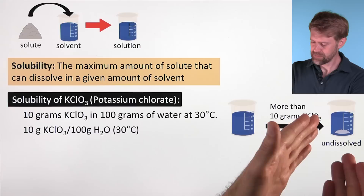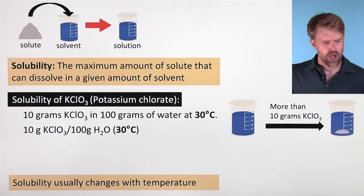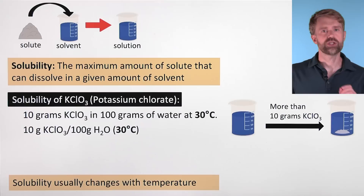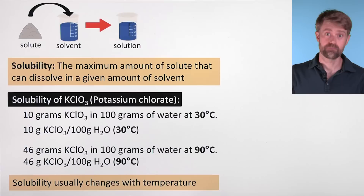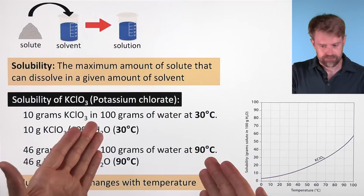It'll just end up on the bottom of the container. Notice that I said 30 degrees here, and that's because solubility usually changes with temperature. For example, at 90 degrees Celsius, 46 grams of potassium chlorate can dissolve in 100 grams of water. That's pretty different. Since solubility changes with temperature, it's often convenient to show this on a graph.